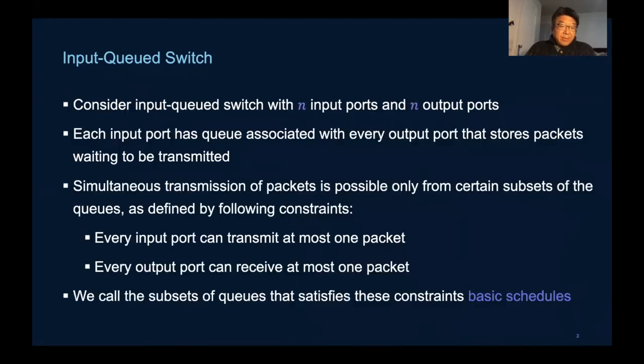In general, there can be n input ports and n output ports, so there are n squared queues, one for each pair of input and output ports.